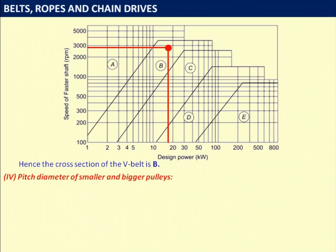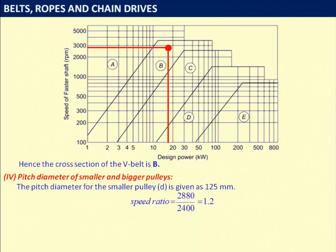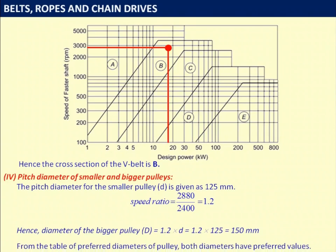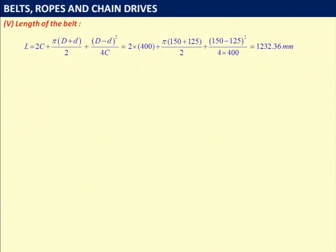Pitch diameter of smaller pulley d = 125 mm. Speed ratio = 2880/2400 = 1.2. Diameter of bigger pulley D = 1.2 × 125 = 150 mm. Since both values are preferred values, they are taken as the design values for pulley diameters. Belt length L = 2C + π(D+d)/2 + (D−d)²/4C. Substituting values gives L = 1232.36 mm.